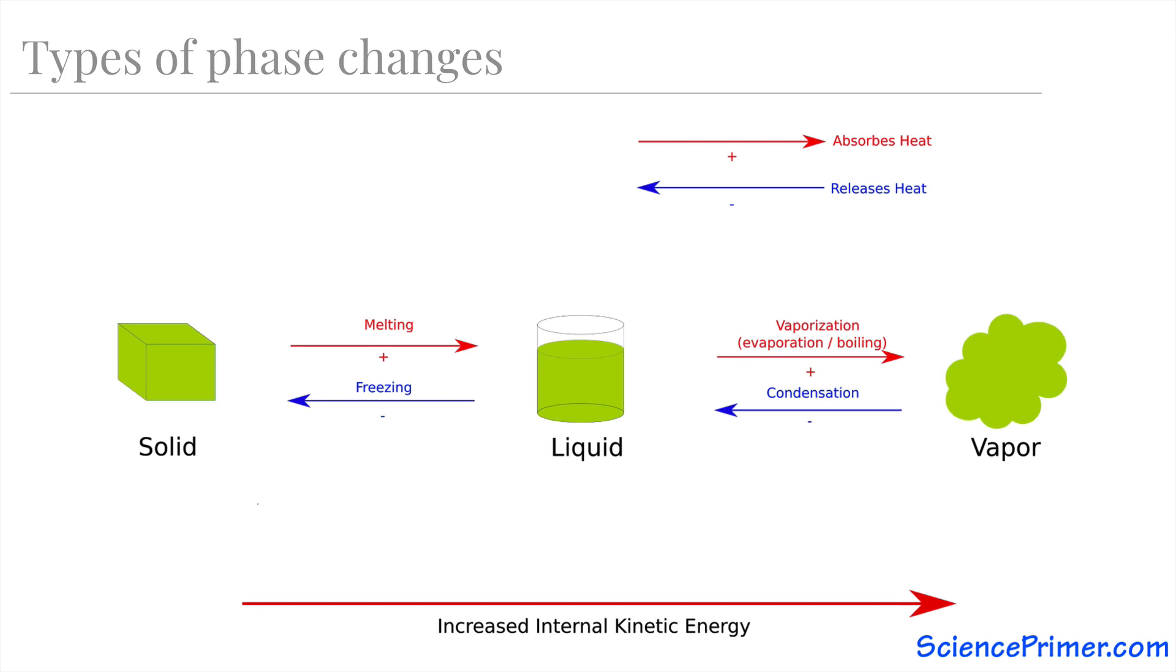Solids can also absorb enough energy to skip the liquid phase altogether, going directly to vapor. This is called sublimation. Likewise, vapor can lose enough energy to bypass the liquid phase and go directly to a solid. This is called deposition.